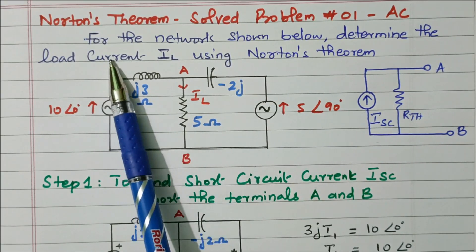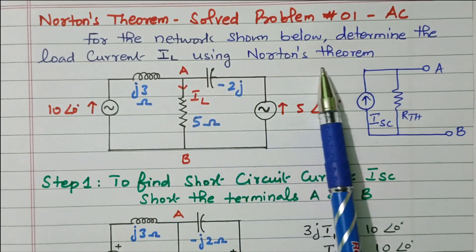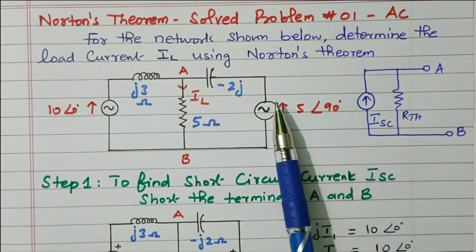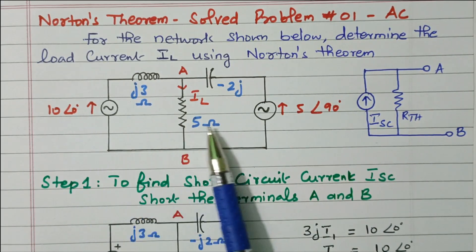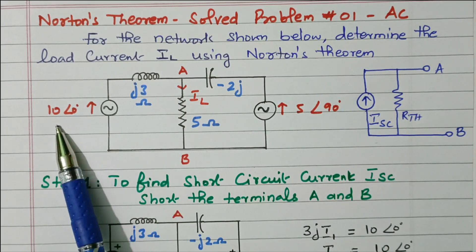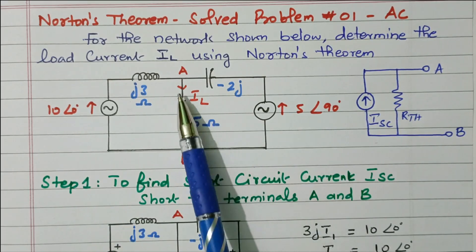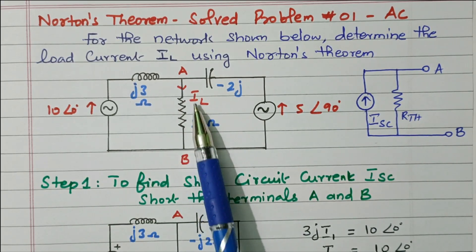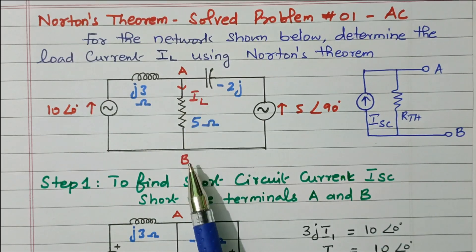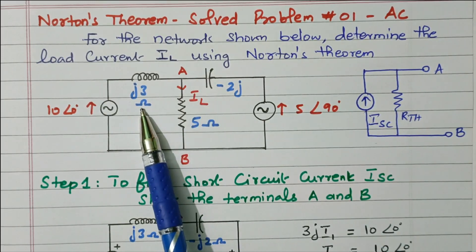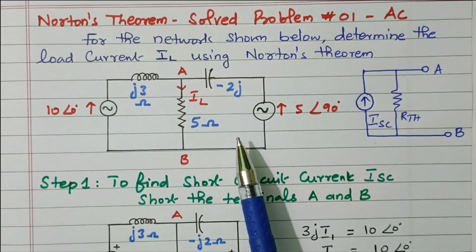Now we will go to the topic. For the network shown below, determine the load current IL using Norton's theorem. We need to find the load current IL. The network has two AC sources: 10V at 0 degrees and 5V at 90 degrees. This is the load terminal AB. We need to find the current flowing through this 5 ohm resistor. One inductor is available: j3 ohm, and a capacitor: minus j2 ohm.